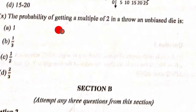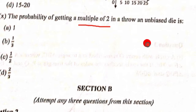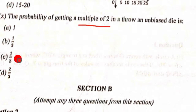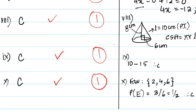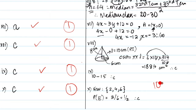Tenth question: The probability of getting a multiple of 2 in a throw of an unbiased die. Multiples of 2 are 2, 4, and 6 — that is 3 favourable outcomes out of 6 total. Probability = 3/6 = 1/2. That is option C, and that is our last mark. For Section A total, we have 10 out of 10.